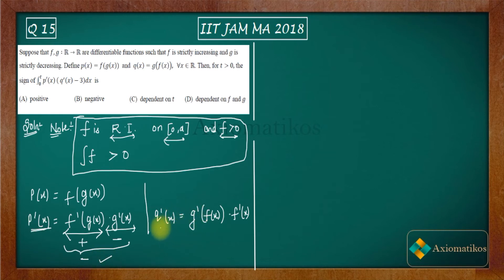Now let us talk about q'(x). We have g to be strictly decreasing. Therefore, this one will be negative. This one will be positive. Therefore, the product will be less than zero. Are you getting my point? So just wait.